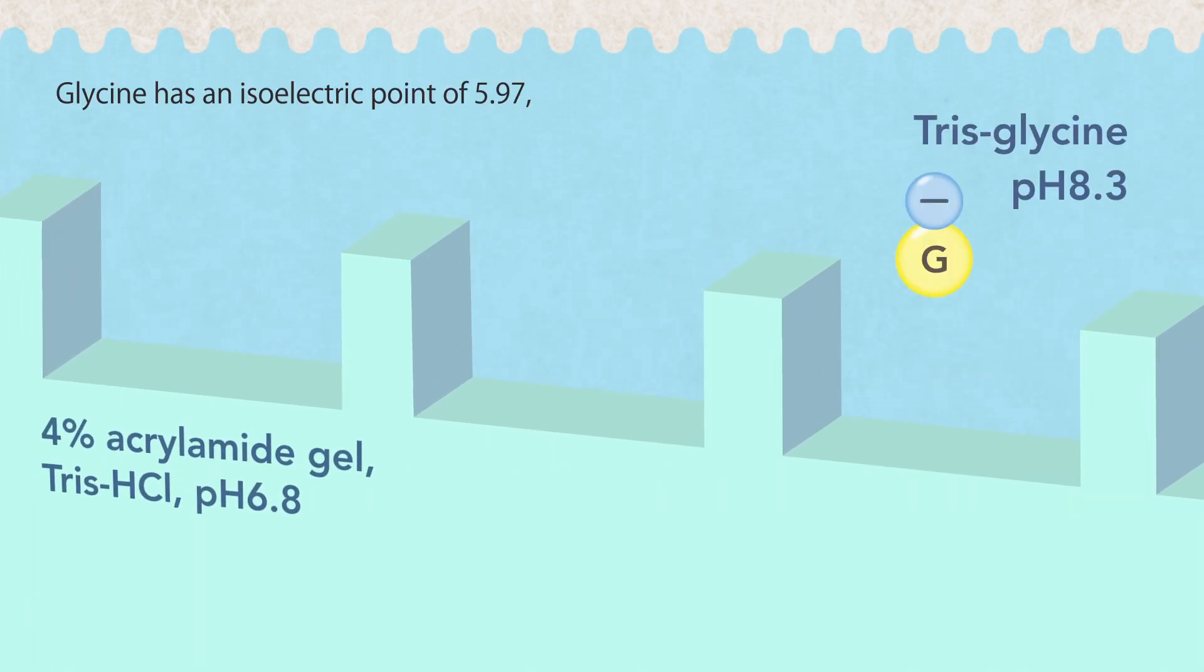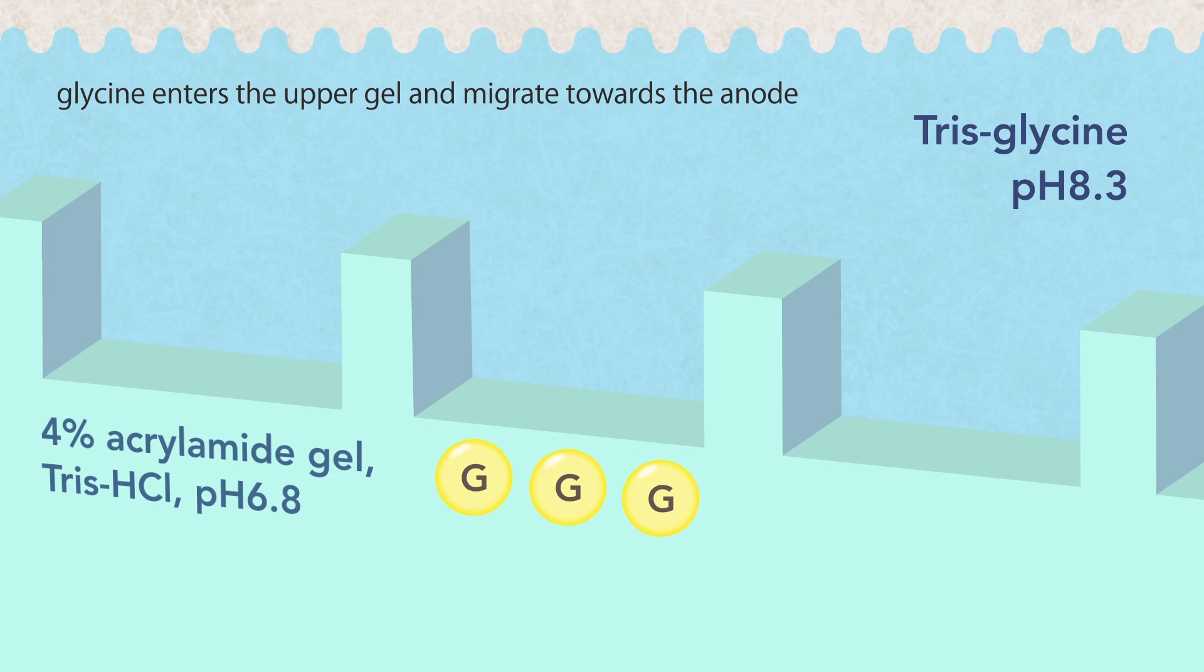Glycine has an isoelectric point of 5.97. Thus, it carries negative charge in the electrobuffer where the pH is 8.3. Under a given electric field, glycine enters the upper gel and migrates towards the anode, but slows down significantly due to the switch of pH to 6.8, where glycine carries almost no charge.